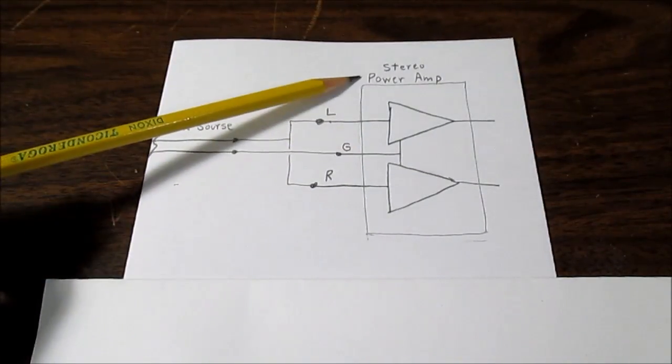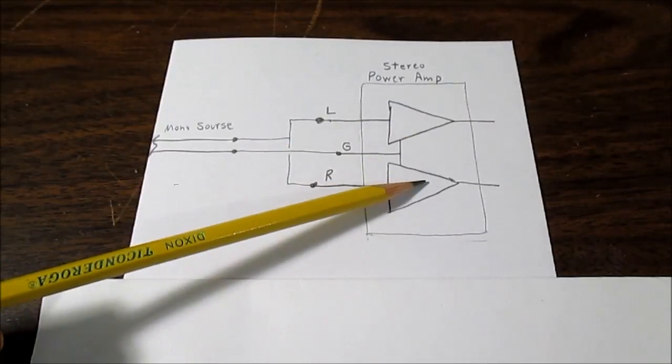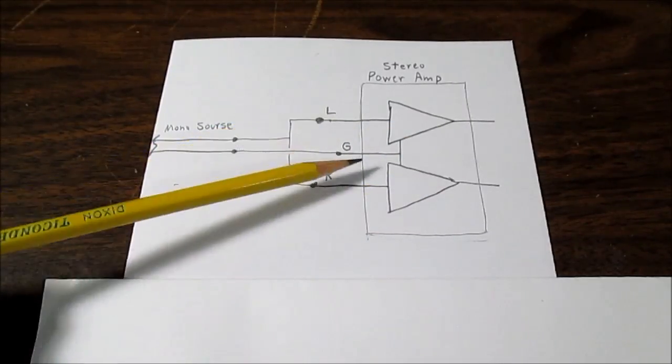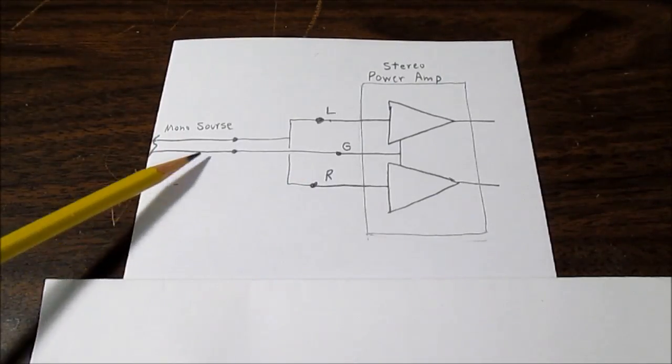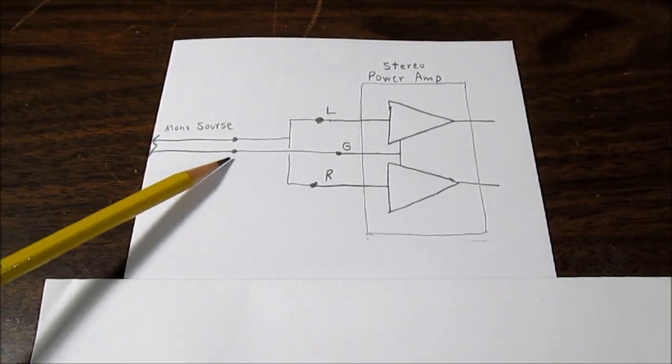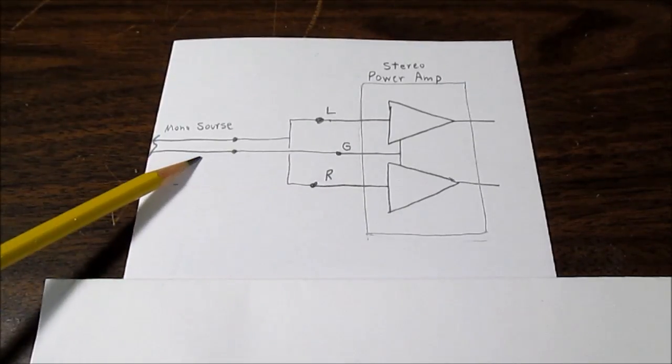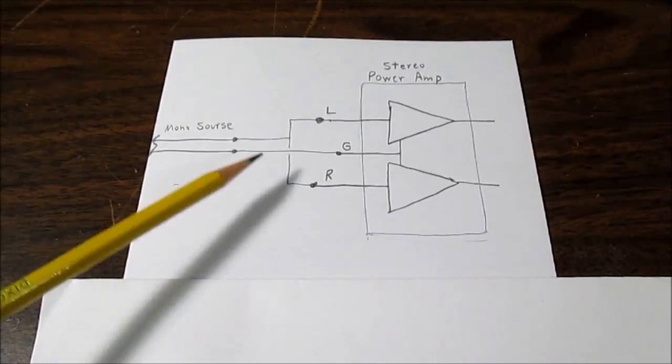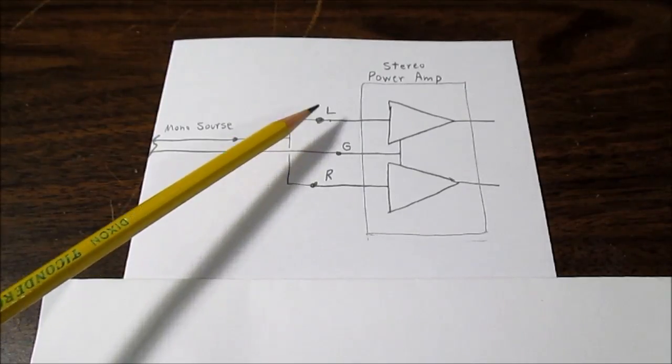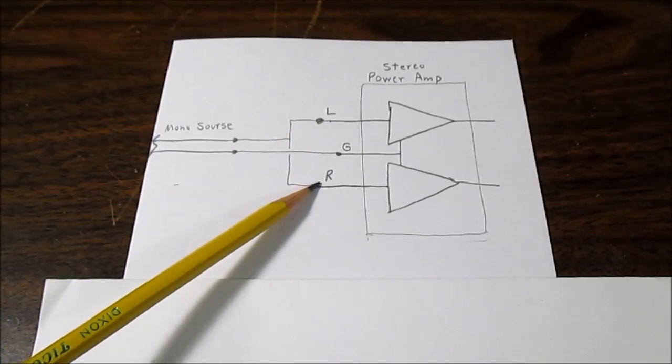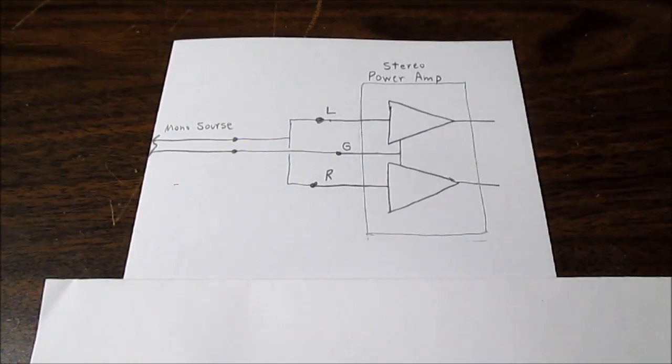So this here represents our stereo amplifier. Of course it has two amplifiers inside. It has the left input, the ground and the right input. Well connecting the mono signal just involves connecting the ground or common line up to the ground of the stereo amplifier. So that just connects straight through. Now the actual signal line connects directly to the left input and also the right input. So you just connect them together like that. And really that's it.